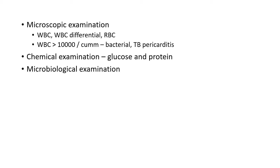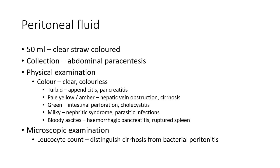For microscopic examination of pericardial fluid — similar to pleural fluid — WBC count, RBC count, differential WBC count, and cytologic examination for malignant cells are done. A total leukocyte count greater than 10,000 per cubic millimeter indicates bacterial or tuberculosis pericarditis. Chemical examination for glucose and protein and microbiological examination are also done.